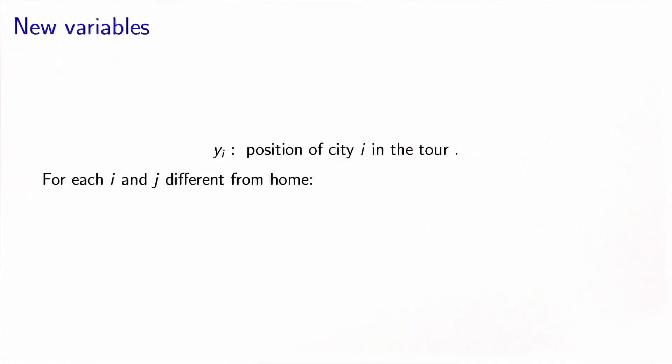The idea is to include new variables. For each city, we will define a variable yi, which will represent the position of city i in the tour. So if we go from Lausanne to Geneva to Zurich, we will number them 0, 1, 2, 3, and so on. We need to impose that for each i and j different from home, if it has been decided that j is visited just after i, then we need the position of j to be at least the position of i plus 1.